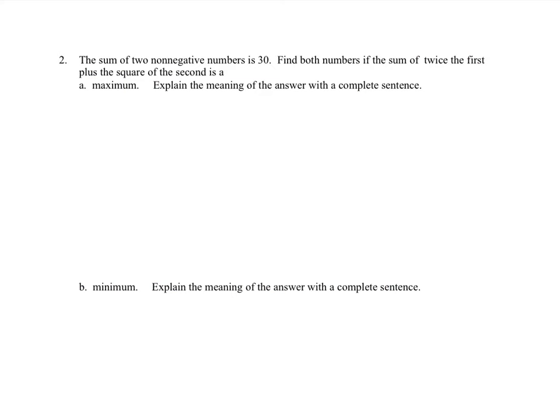Number 2 is a more generic type problem. The sum of two non-negative numbers is 30. Find both numbers if the sum of twice the first plus the square of the second is a maximum. So I have two numbers, let's call them x and y. What do I want to optimize? My primary equation is the thing that I want to optimize. The sum of twice the first plus the square of the second is a maximum. So this sum is going to be 2x + y². My secondary equation relates x and y together so I can get one in terms of the other: x + y = 30. So I can solve for y right away: y = 30 - x.